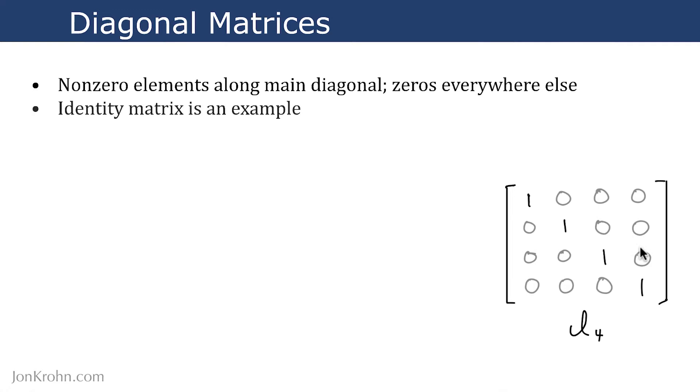The identity matrix, which we already saw in an earlier video in the Machine Learning Foundation series, is an example of a diagonal matrix. So here's the I4 identity matrix. The distinction is that an identity matrix is a special type of diagonal matrix. While identity matrices are diagonal matrices, you could have other diagonal matrices where instead of just ones, you could have other values along the main diagonal.